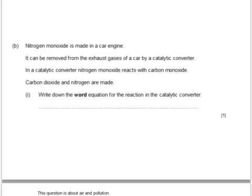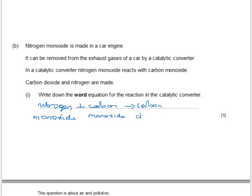Here's a past paper question. Nitrogen monoxide is made in a car engine. It can be removed from the exhaust gases by a catalytic converter. In a catalytic converter, nitrogen monoxide reacts with carbon monoxide. Carbon dioxide and nitrogen are made. Write down the word equation for the reaction in the catalytic converter. This question is straightforward because we're given all of the reactants and all of the products. The answer is: nitrogen monoxide + carbon monoxide → carbon dioxide + nitrogen.